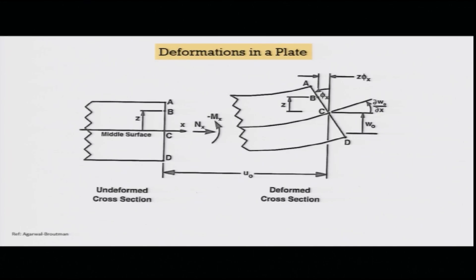Now let us look at the deformation in the plate and get an expression for it. The left side is the undeformed section with a middle surface. We focus on a point at distance z on a particular cross-section. There are four points: A and D at the two extremes, C as the geometric midpoint, and B at distance z from the middle surface. This system is subjected to both a stretching force and a bending force. There are sign conventions — as long as you follow one regular convention like sagging positive, hogging negative, it is fine.